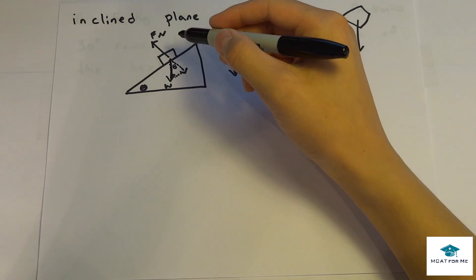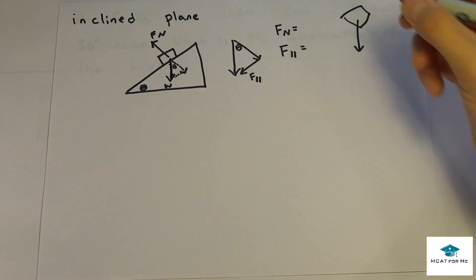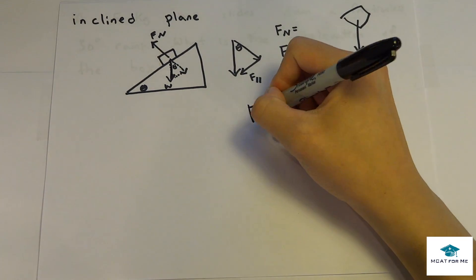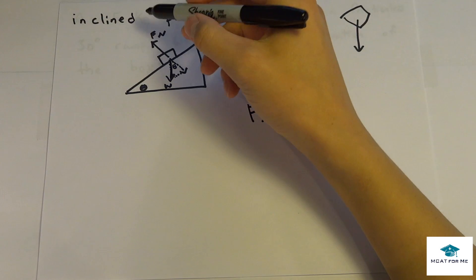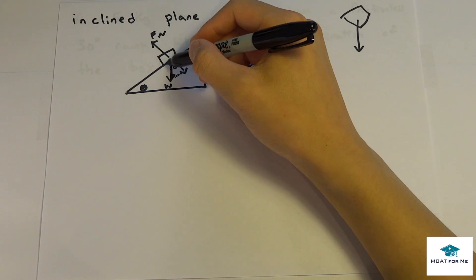And one thing that we have to do is we have to know what the normal force is. So what exactly is the normal force? So f of n, so we have this little triangle right here that we have to draw, it's just something that we have to remember.